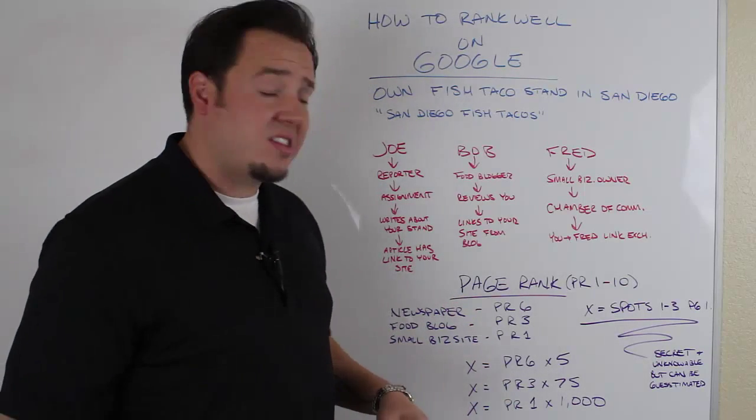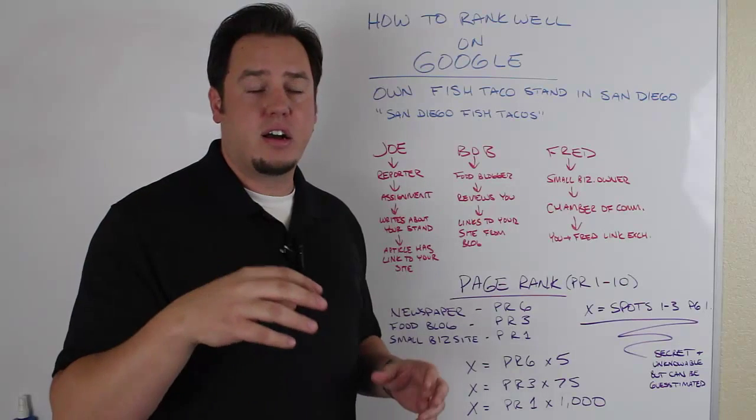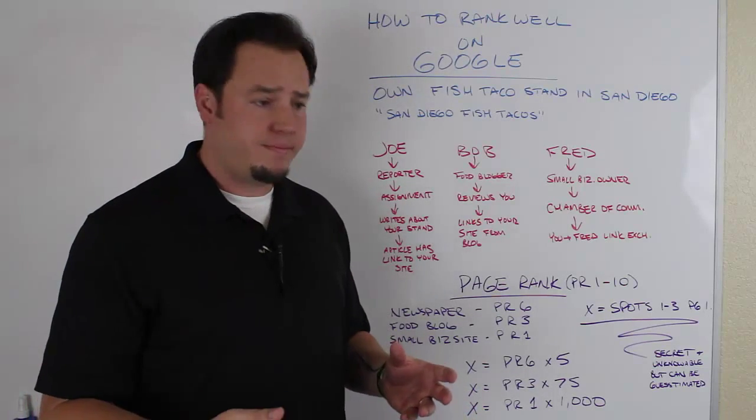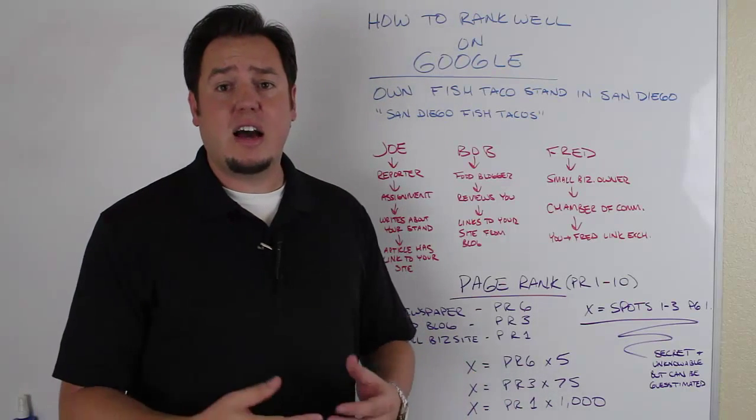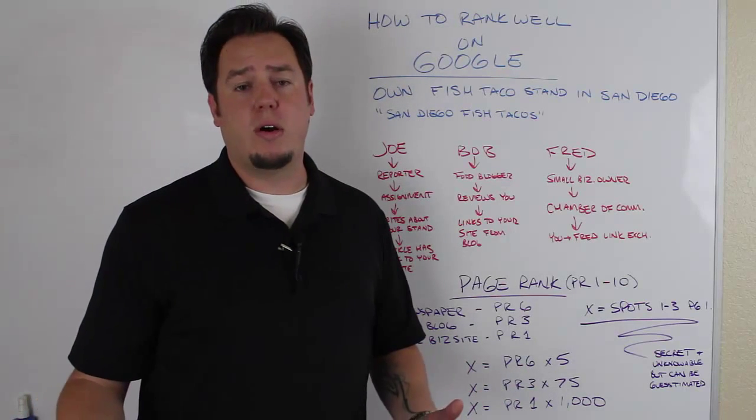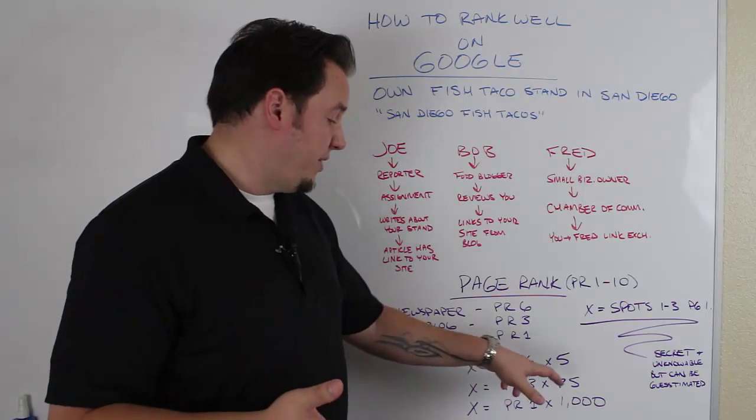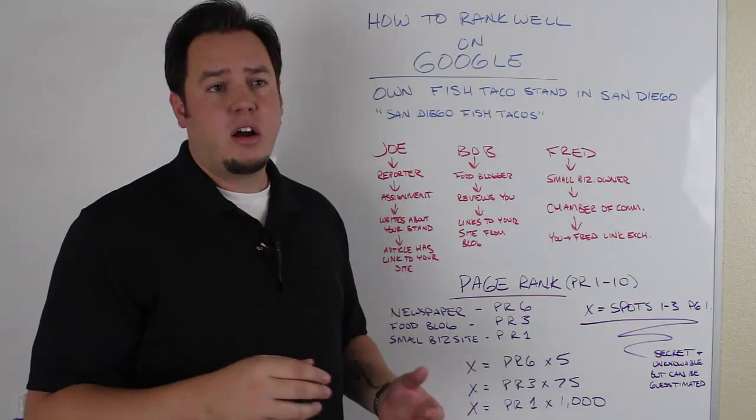But we can kind of guesstimate by evaluating your competitors. And then finally, a small business site that doesn't have much content on the site, it's not a very big site, might only be a PR1. So with that, it might take 1,000 links from PR1 websites to equal five links from PR6 websites.